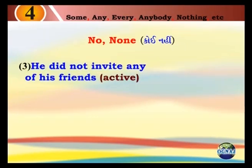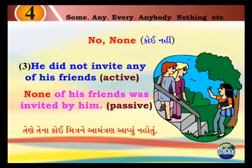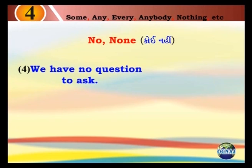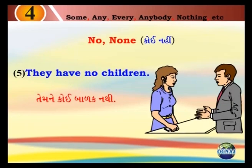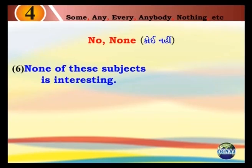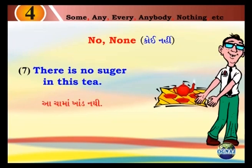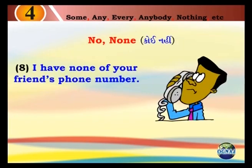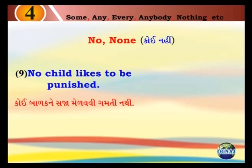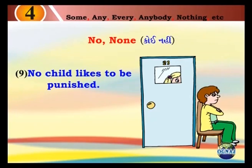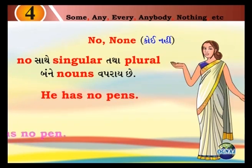13. He did not invite any of his friends. None of his friends was invited by him. Tienae tena koi mitra ne aamantra naapyo naathii. 14. We have no question to ask. Mare koi prashna puchwaano naathii. 15. They have no children. Tiemne koi baalak naathii. 16. None of this subject is interesting. Aamadhi koi pen vishay rasprat naathii. 17. There is no sugar in this tea. Aaj aamah khand naathii. 18. I have none of your friend's phone number. Mare paasetara koi mitra no phone number naathii. 19. No child likes to be punished. Koi baalak nae saja međavvi gamtii naathii. No ni saati singular tathaa plural banne nouns vabraai che. He has no pens. He has no pen.